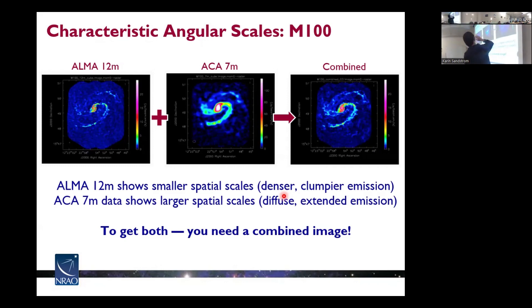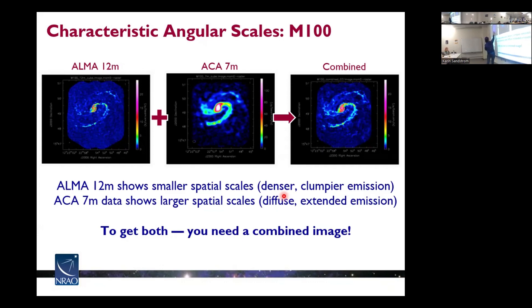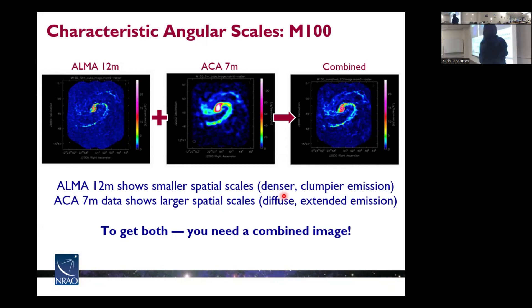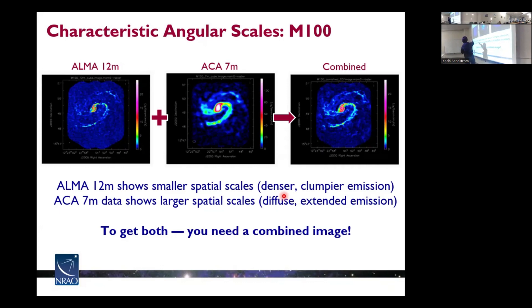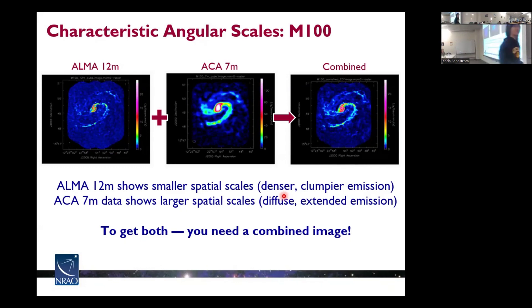Here is some real data from ALMA — an observation of the nearby galaxy NGC 400. You can see the 12-meter-only image is only showing the higher-resolution features, like detailed variations in the center of the galaxy. The 7-meter, on the other hand, only shows the broad and diffuse structure — we can no longer see the structure in the center. What we really need is both. We need to combine these images. Without the short spacing, in higher-resolution observations, many diffuse emissions are resolved out. We really need both the high and low spatial frequency observations.